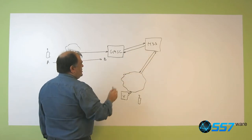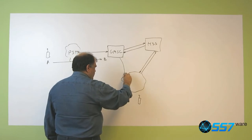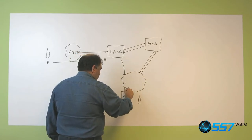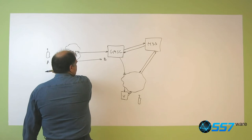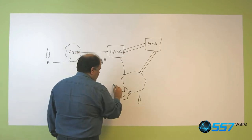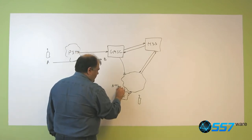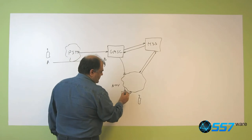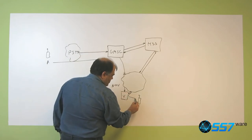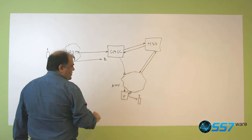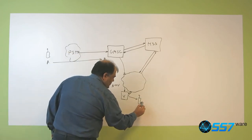And then the GMSC would do another call going through here and here. But this time the call is not from A to B, it's from A to V. And it will be rewritten here in the visited network. So subscriber B would actually receive the call that's for him.